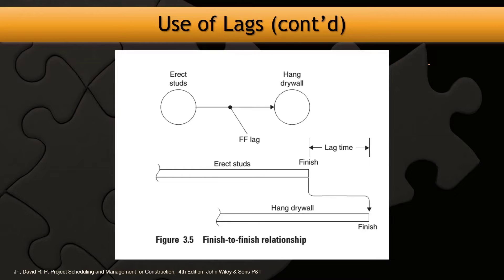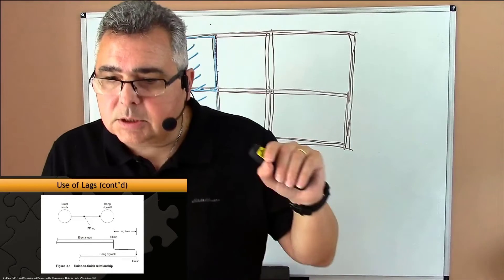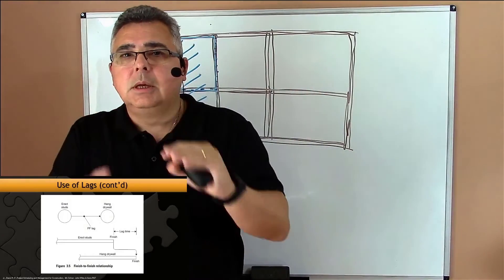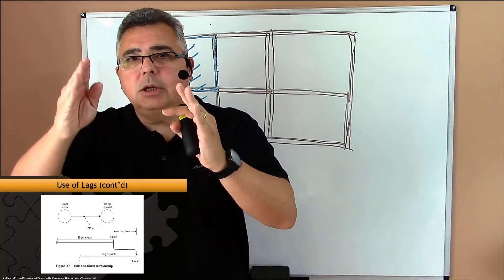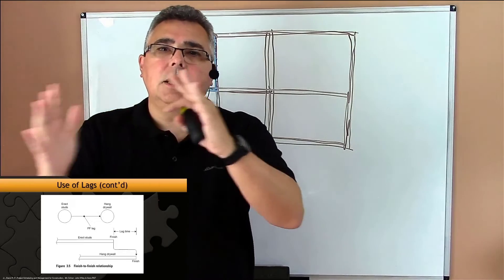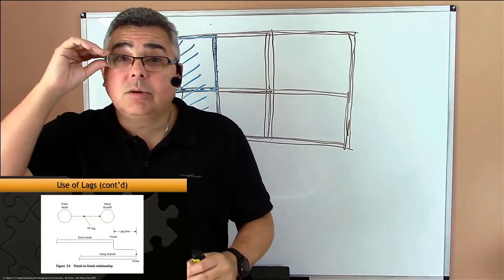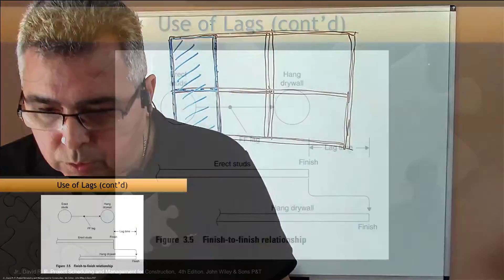I can use start-to-start to overlap tasks or finish-to-finish to overlap tasks. The first one, I create the relationship on the starting times and I can compute the times. The second alternative, I create a relationship in the finishing time and then I can compute times. And the question is: when should I use one or another?